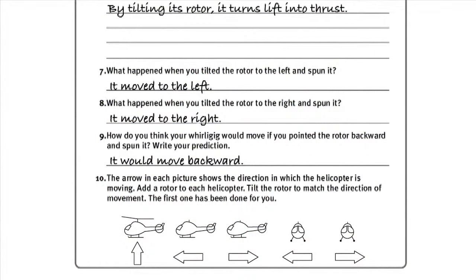When they have finished their trials, bring students back to the classroom and have them look at the pictures at the bottom of Part B on their activity sheets. Instruct them to draw the rotor blades on each helicopter at the angle that corresponds to their direction of movement.